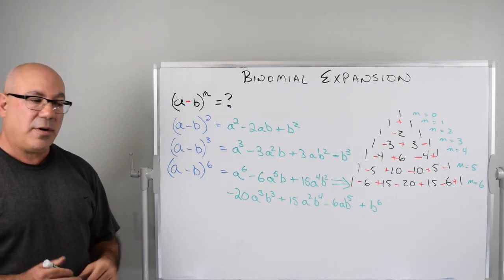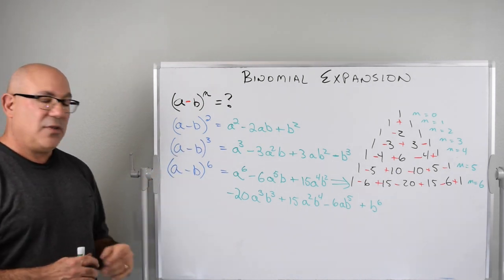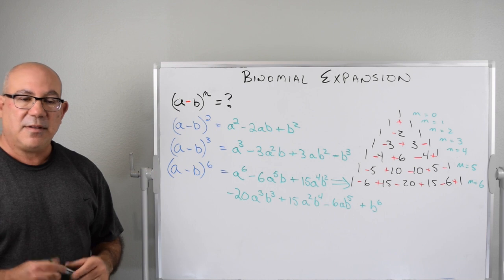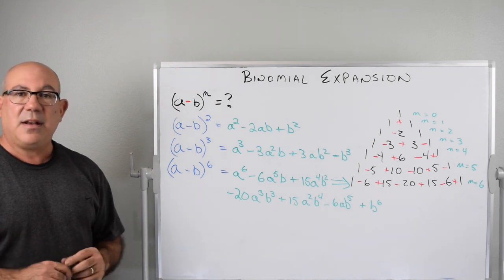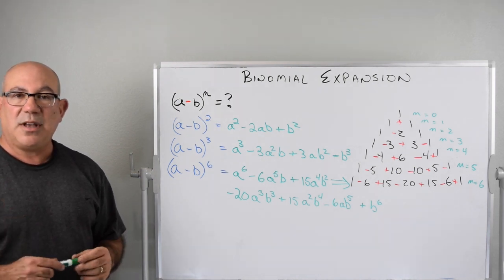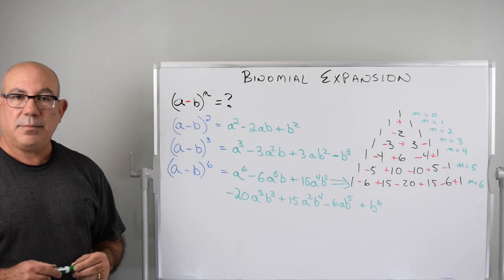That's our binomial expansion for (a minus b) to the n — very simple and straightforward. Between this video and the other video in the comments, you have everything you need for binomial expansion. Thanks for watching and we'll see you on the next video.